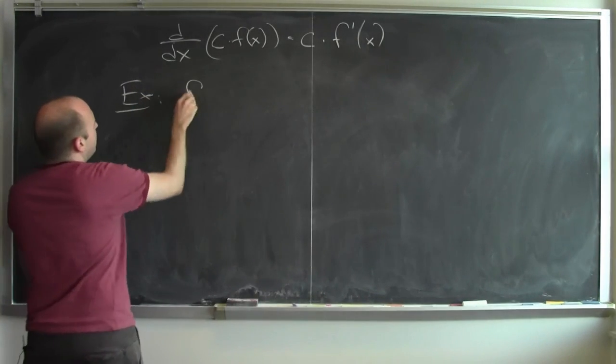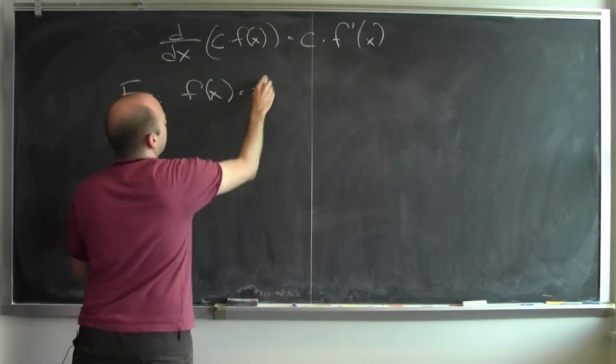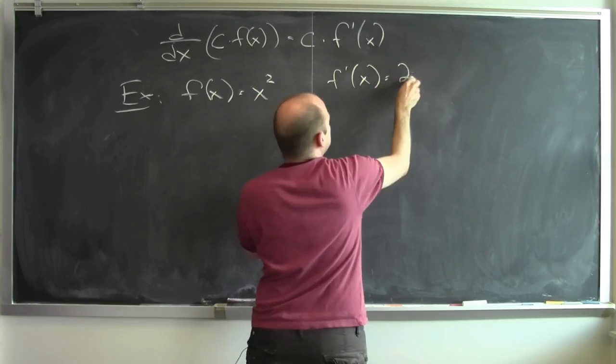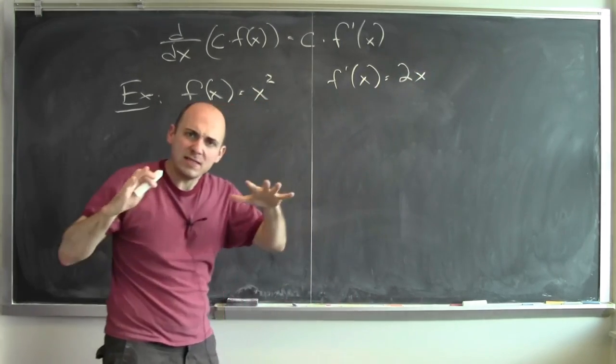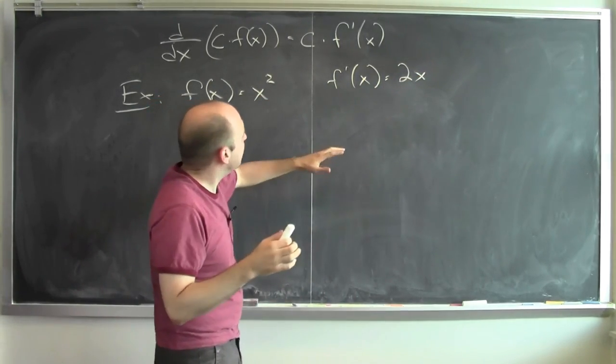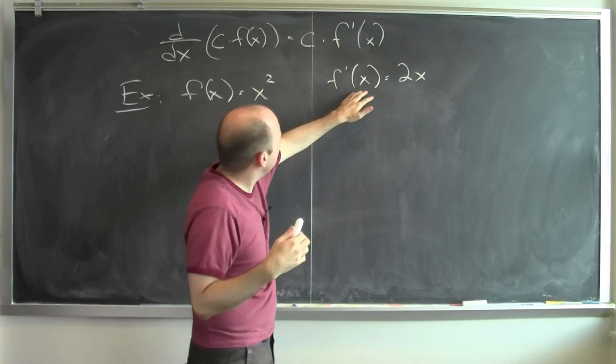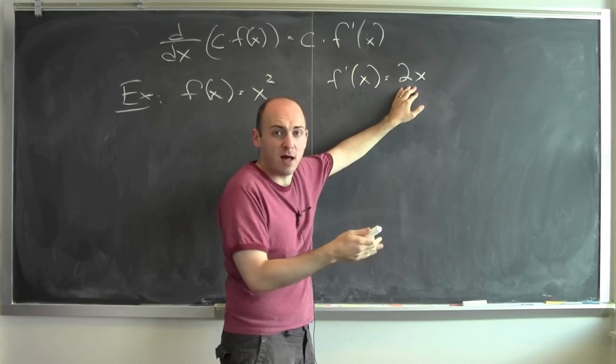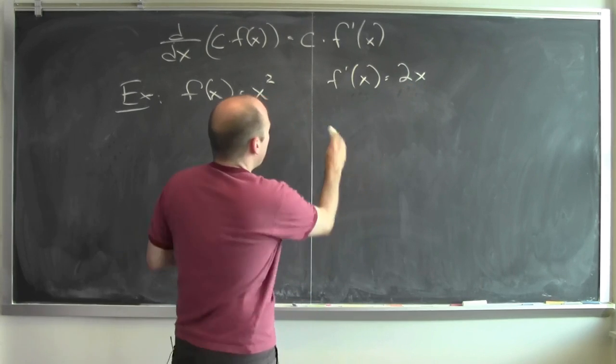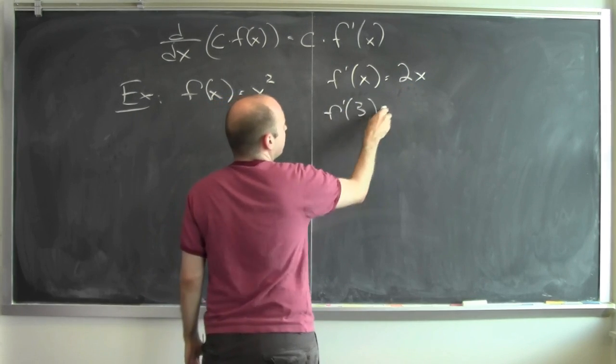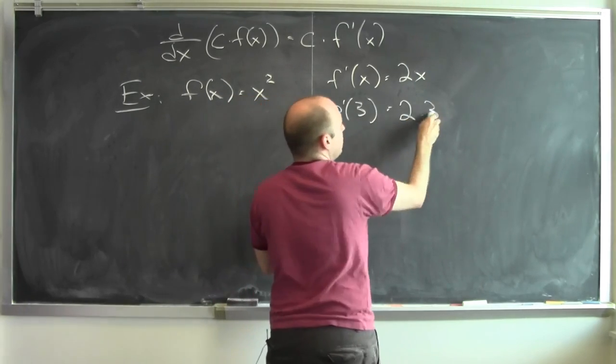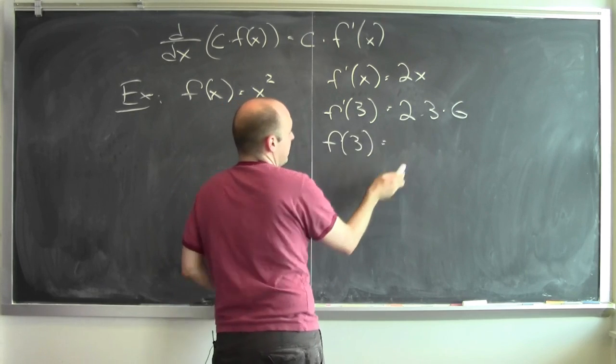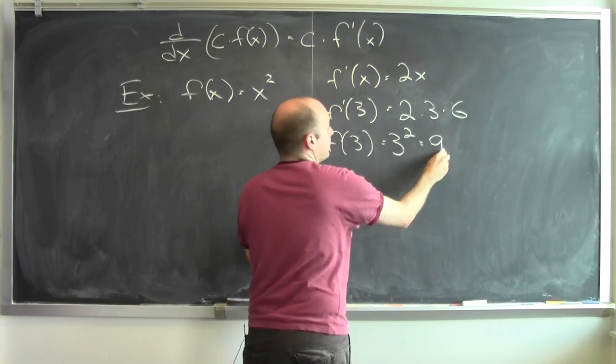So here's an example. Take a look at a function f of x equals x squared. You know the derivative of this function. The derivative of this function is 2x. What does that mean? That means that for a given value of x, if I wiggle that value of x, the output wiggles by about 2 times that value of x. But really concretely, the derivative of this function at 3 is 2 times 3 is 6. And the function's value at 3 is 3 squared, which is 9.